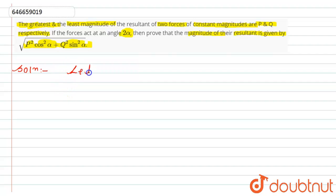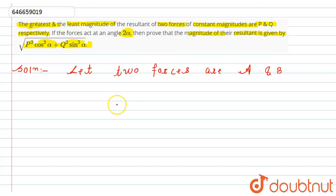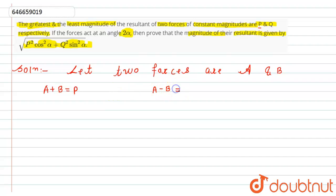Let the two forces be a and b. Then according to the question, when we add these two forces it gives us the greater magnitude, that is a plus b. While if we subtract them, it gives us the least magnitude. According to the question, the greatest magnitude is p, so a plus b equals p, while the least magnitude is q, so a minus b equals q.